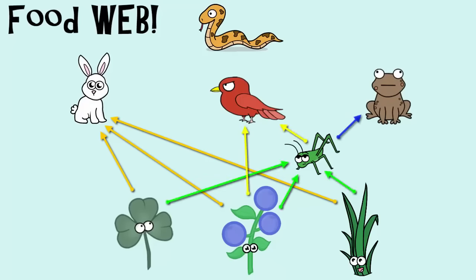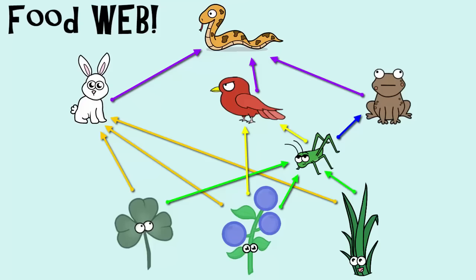Instead, it has more of a food web. A food web is made up of multiple food chains that interact together. Notice how now we have multiple food chains tied in with our original to make a food web. The beauty of a food web is that it shows more interactions among a variety of producers and various level consumers.